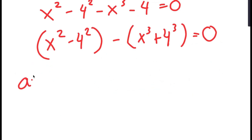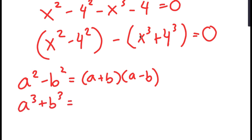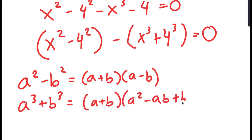Now, if I have something in the form of a squared minus b squared, this is equal to a plus b times a minus b. And if I have something in the form a to the power of 3 plus b to the power of 3, this is equal to a plus b times a squared minus ab plus b squared.